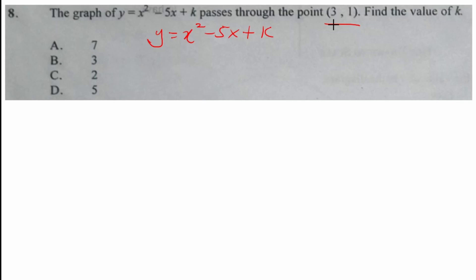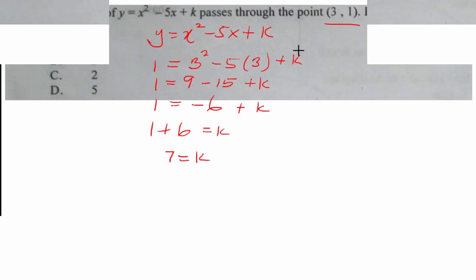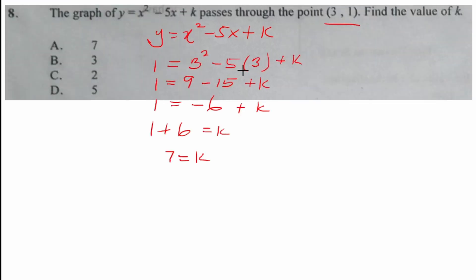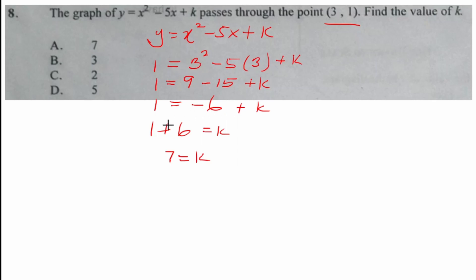Let's substitute 3 for x and 1 for y. Wherever I see y I substituted 1, and wherever I see x I substituted 3. So 1 is in place of y, and 3 is in place of x. Then 3 squared is 9, negative 5 times 3 is negative 15, plus k. Then 9 minus 15 is negative 6. Adding 6 to both sides, we have k equal to 7.